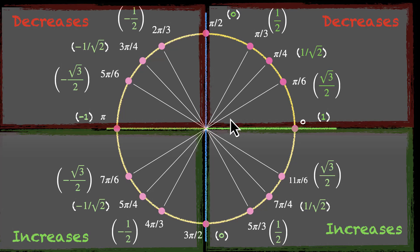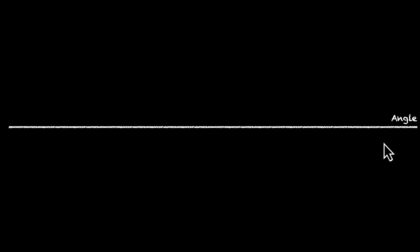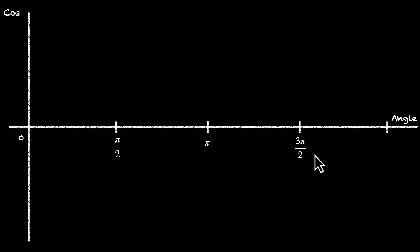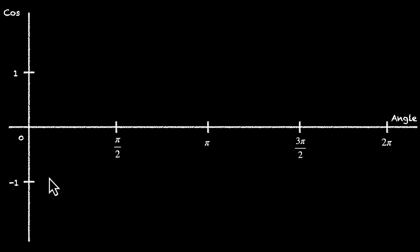Let's now use this to plot the graph of cos x. We have an axis on which we'll plot the angles, and on the other axis we'll plot the value of cos x. Let's quickly mark a few angles: 0, pi by 2, pi, 3 pi by 2, and then 2 pi. All four quadrants are in place. Now let's mark the values of cos — the highest value is 1 and the lowest value is minus 1.